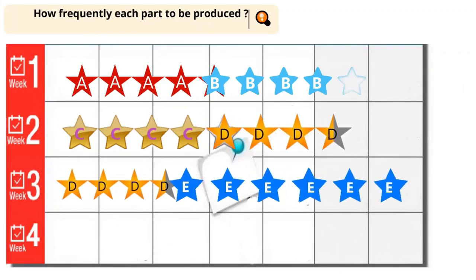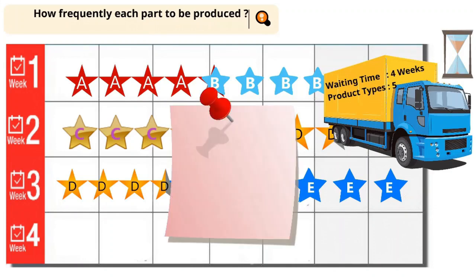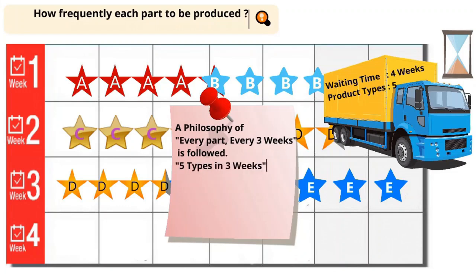The dispatch truck has to wait for three weeks to get all five products for dispatch. It is possible by having a philosophy of every part every three weeks — five types in three weeks. For this, the production levelling ratio is 1.66.